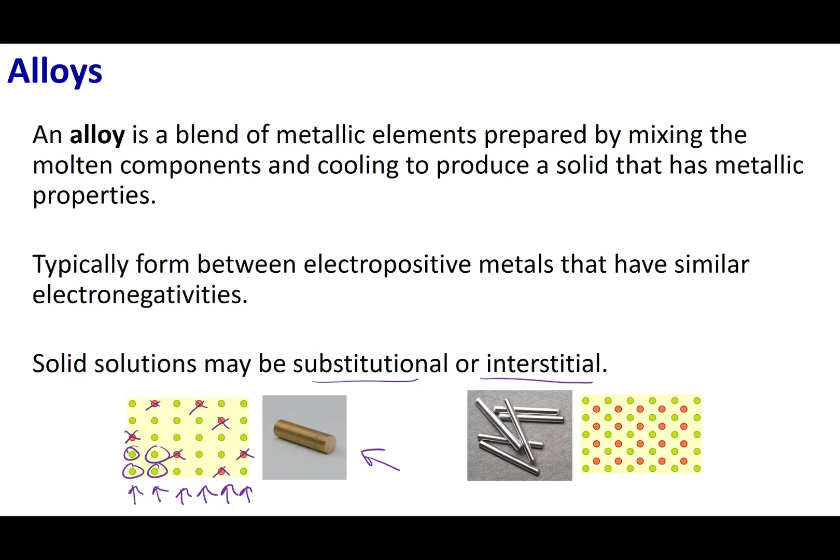Another type of substitutional alloy is bronze. In bronze, we replace 12% of the copper atoms with tin atoms.